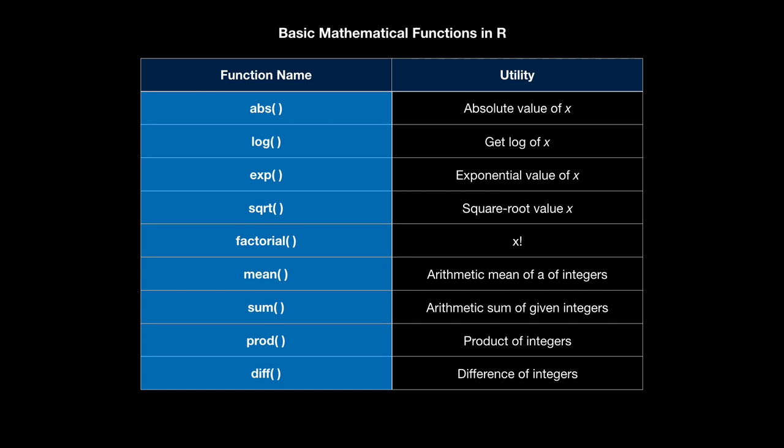So abs will stand for absolute value of x and it'll go all the way down to diff which is difference in integers. Some of these will express the actual function, some of these will be acronyms, some of them will be shorthand notations for what they are as well.